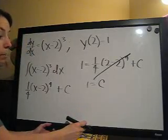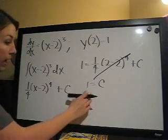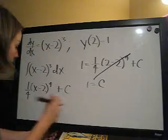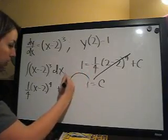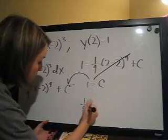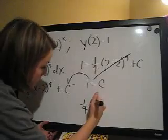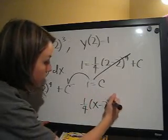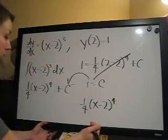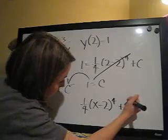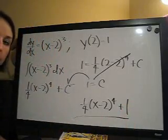Now we can plug back in for C. So our final equation is 1/4 times (x-2)⁴ plus 1. And we solve the initial value problem.